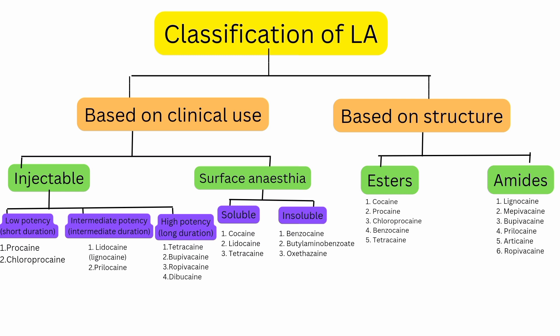For example, noting that Procaine is used in suturing of cut wounds makes it easier to revise classifications. Procaine is not commonly used now because better agents are available and it has some major drawbacks.